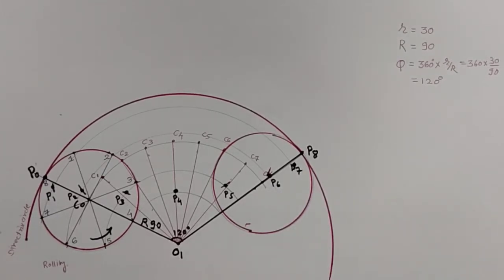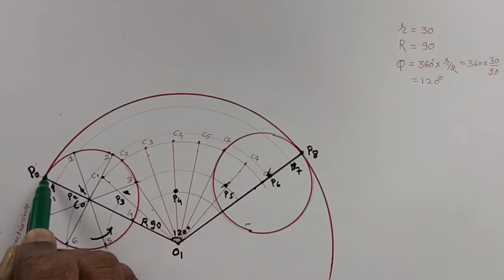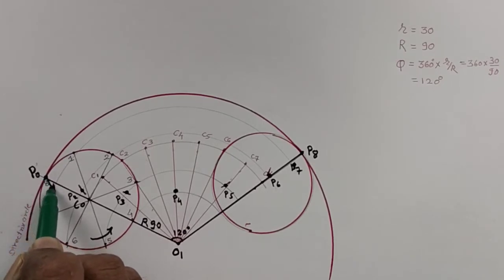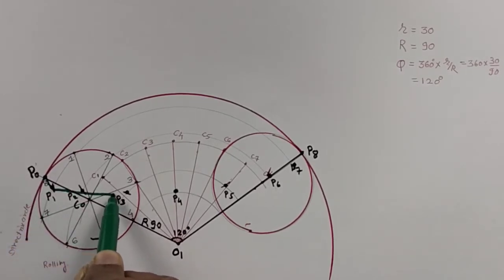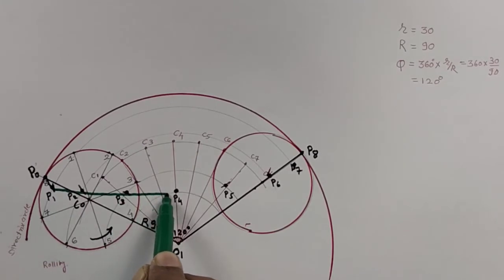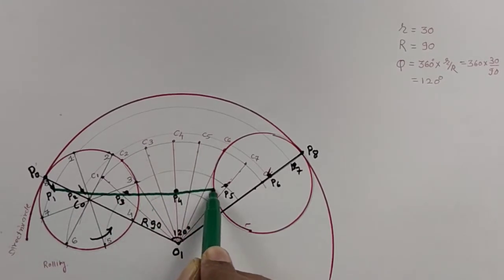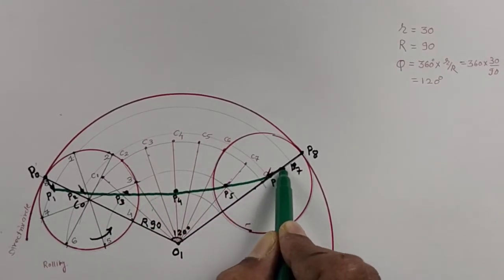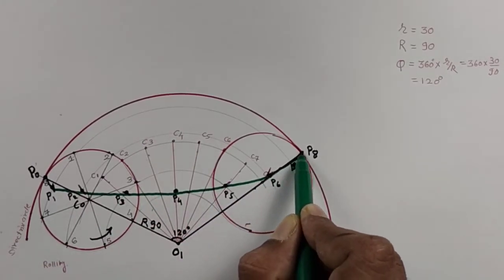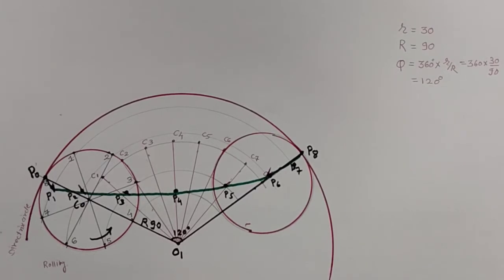You can join all the points with a smooth curve. Start from your hypocycloid P0, then P1, P2, P3, P4, P5, P6, P7, and P8. This is our hypocycloid.